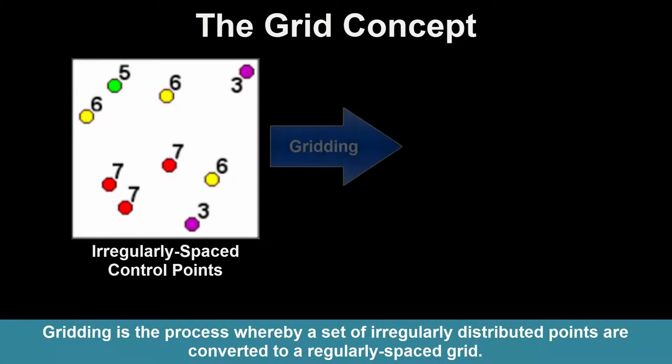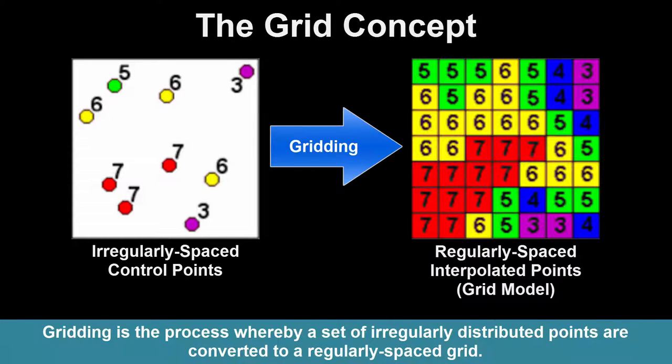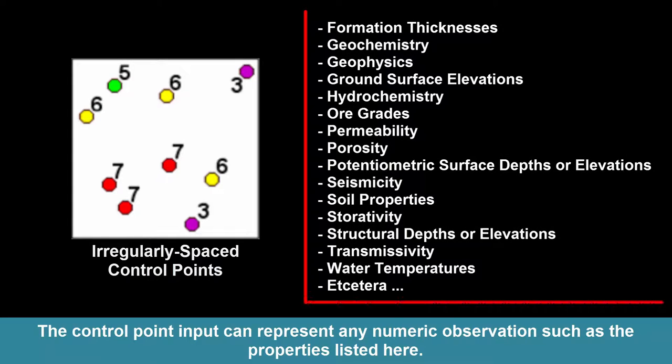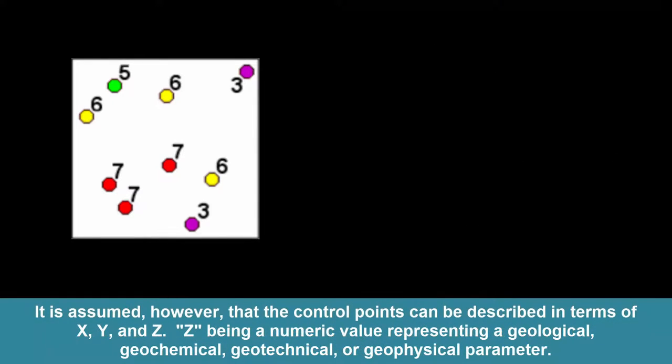Gridding is the process whereby a set of irregularly distributed points are converted to a regularly spaced grid. The control point input can represent any numeric observation, such as the properties listed here.